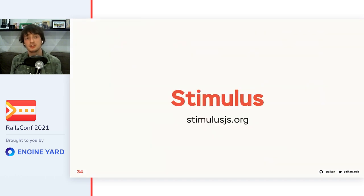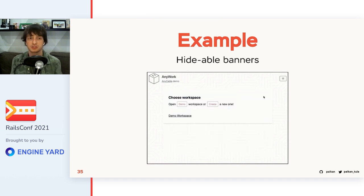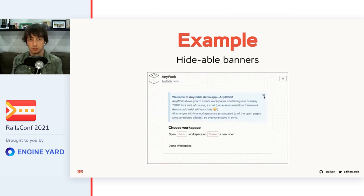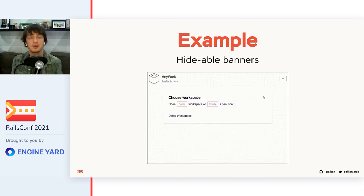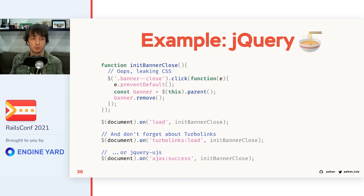Let's talk about Stimulus.js a bit and why it's a good companion for Rails development. We have hideable banners in the application showing tips to users, and the user can close them by clicking the corresponding button. Ten years ago we would have written this with jQuery and had to deal with all the unrelated stuff — events, CSS classes, other libraries like Turbolinks and jQuery UJS — to make sure patterns are always activated. That was too error-prone, too unreadable. Everyone remembers the so-called jQuery spaghetti code.